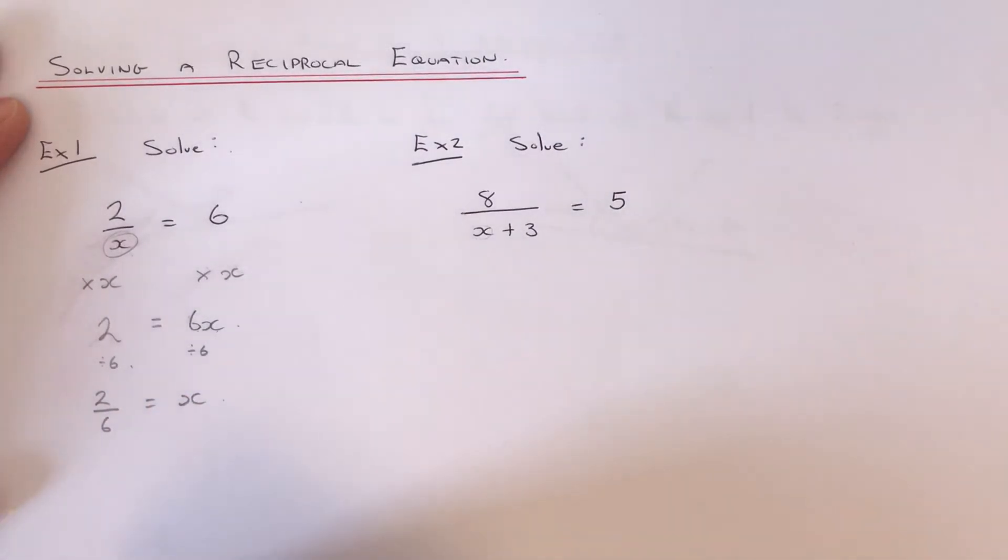And we can simplify 2 over 6 down to 1 third. So x is 1 third.